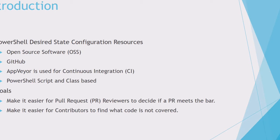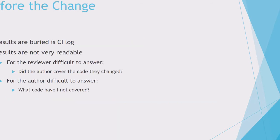In our project to do code coverage, the goal was to make it easier to review pull requests so that reviewers could decide whether a pull request meets our bar. Another goal was to make it easier for contributors to find what code was not covered. Before the change, the results were buried in the CI log and were not very readable.